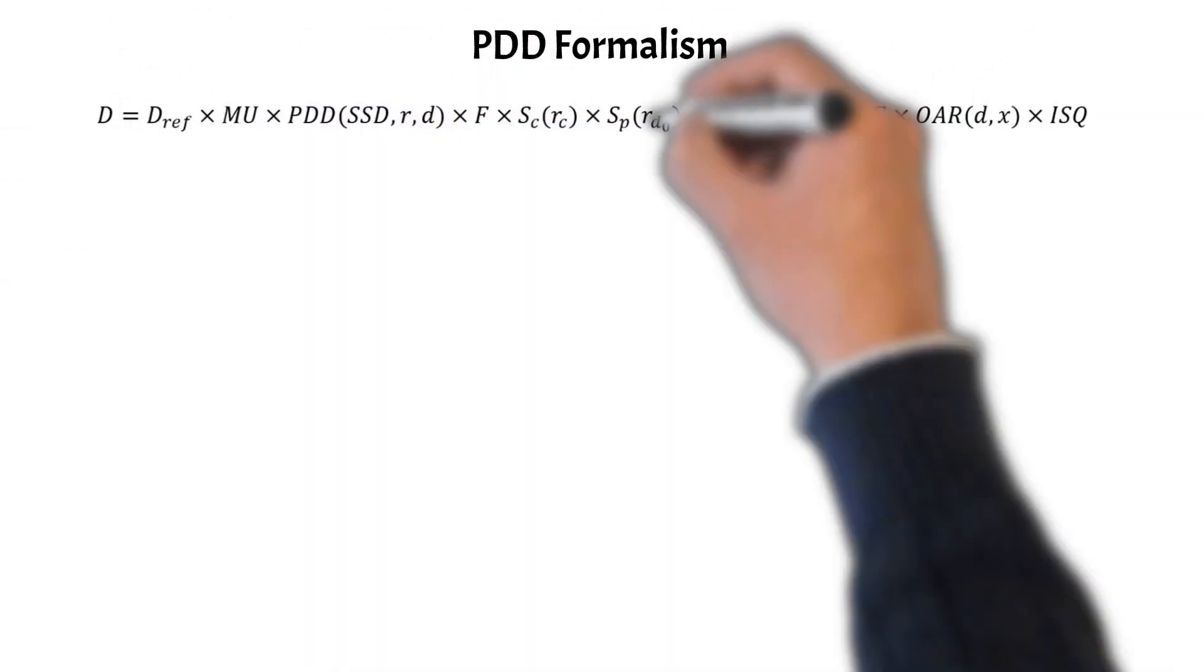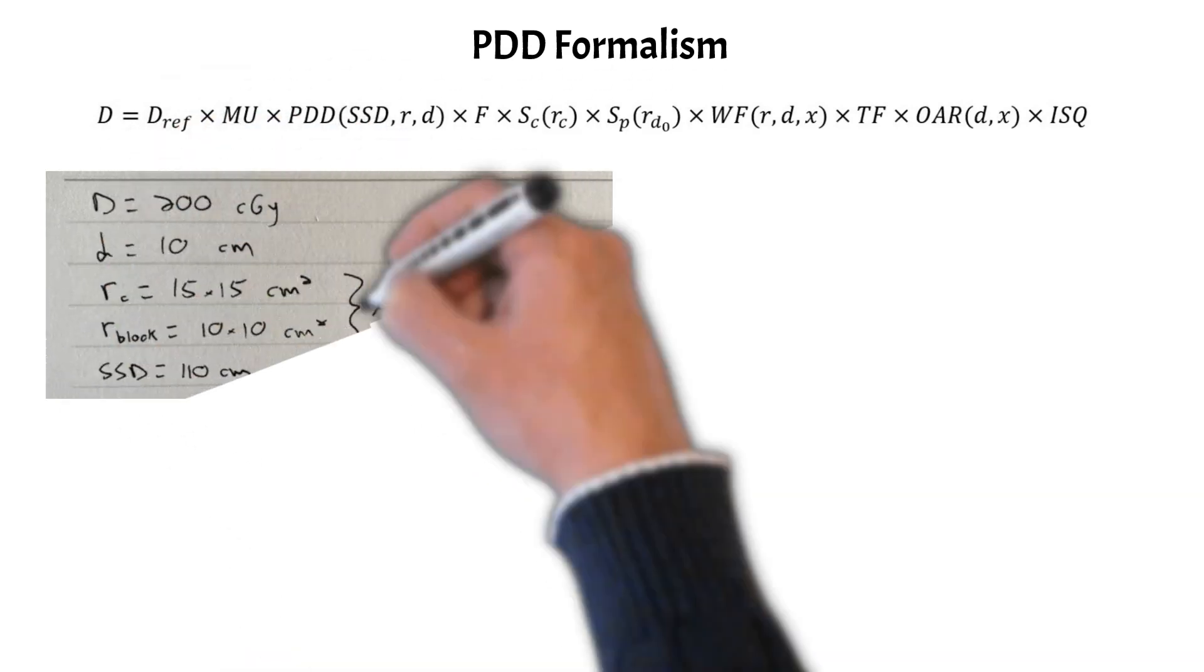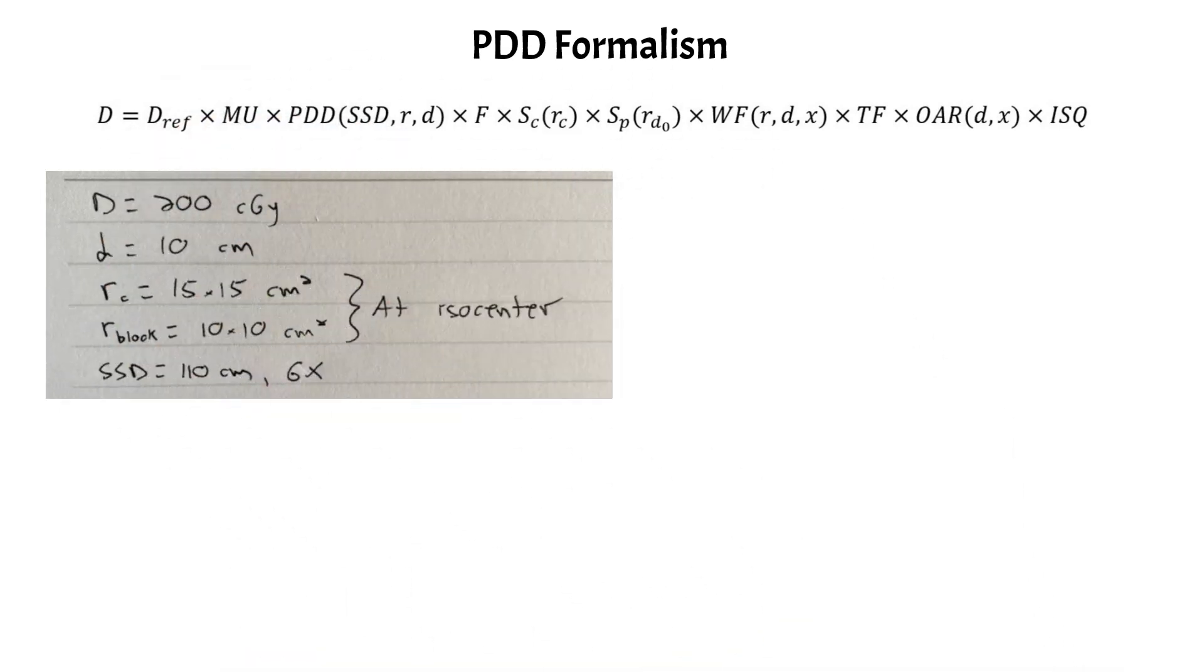So we're first going to start with the PDD formalism, and I brought back the PDD dose calculation equation, which is shown here, just to refresh your memories a little bit. And of course, I write down some of the parameters we are given. We're given the dose, the depth, the collimator, and block field sizes at the isocenter, and also that the SSD is 110 centimeters.